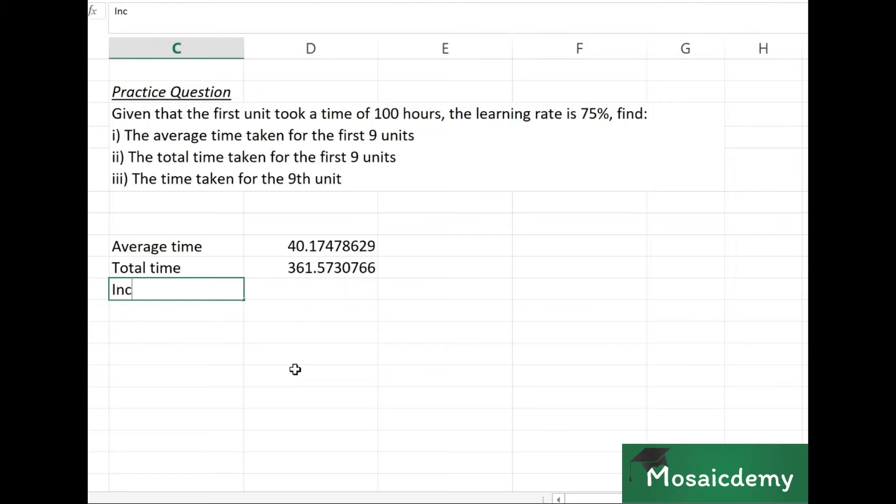For the incremental time, we need to calculate the average and total time for 8 units as well. This was for 9 units, now we need to do the same calculation for 8 units.